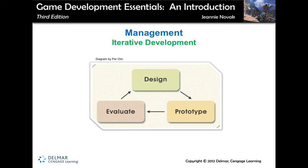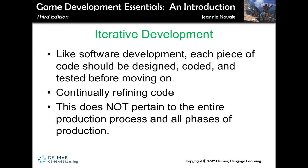Iterative development is a three-stage design process — a circular process where you first design something, then come up with a prototype of it, and then evaluate that prototype. If there are problems, you go back to design; if there aren't, you move on. This is like design, code, test. In software development, each piece of code should be designed, coded, and tested this way before moving on, so you are continually refining your code. This does not pertain to the entire production process — it applies to every tiny piece of code.